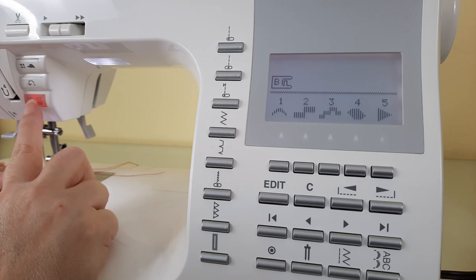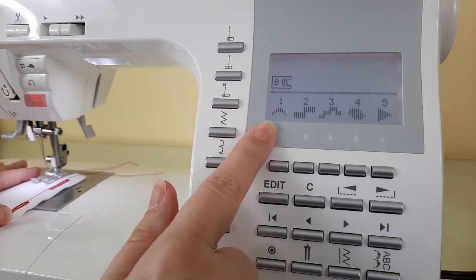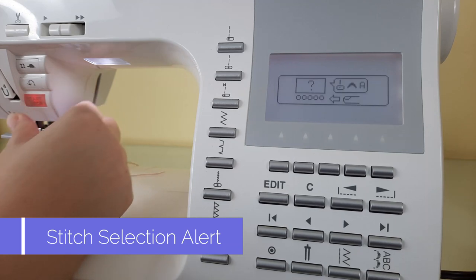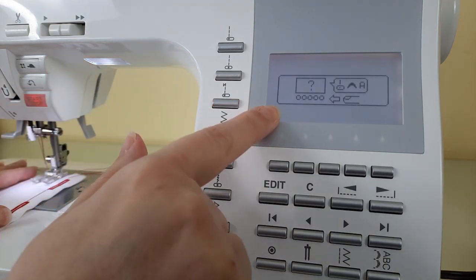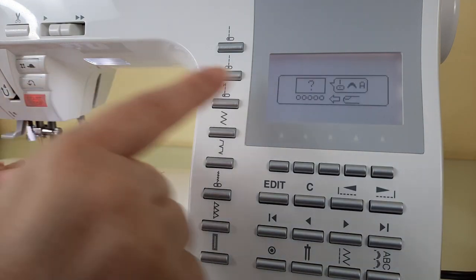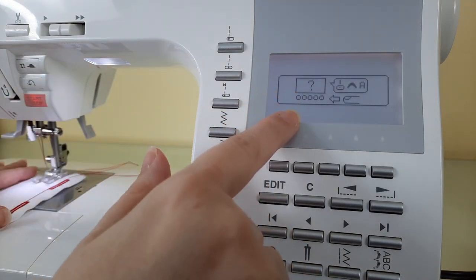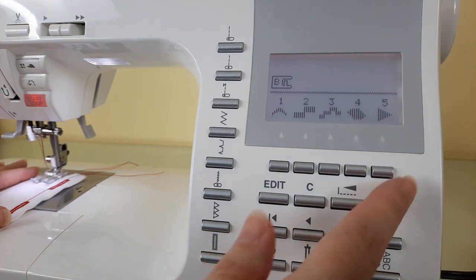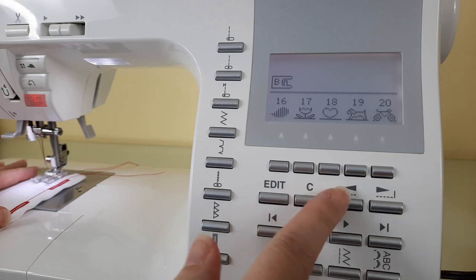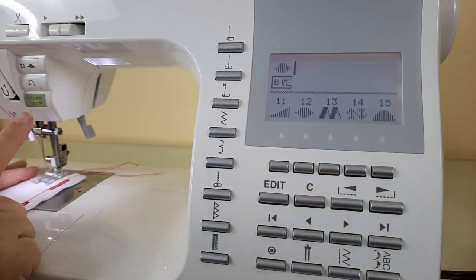So if you go to start to sew, it's going to ask you, but what stitch would you like to sew? Let me show that to you again. It's asking you, a question mark, to please select your stitch. So then you can go through and select your stitch at that point, and then you can see that your start-stop button is now green and you're all set to go.